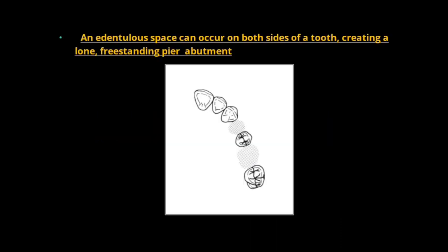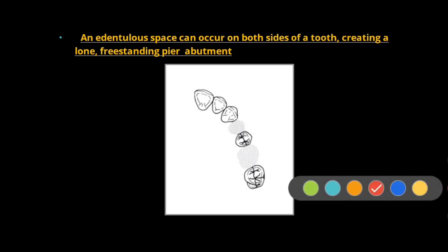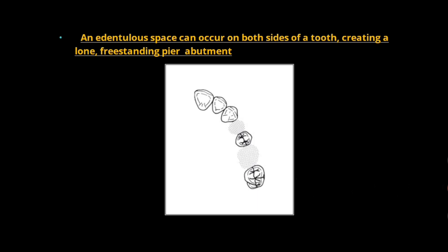Welcome back to Bibliotent. Today's topic is pier abutment. The first point: an edentulous space can occur on both sides of a tooth, creating a lone freestanding pier abutment.